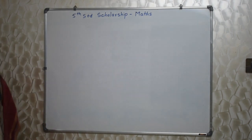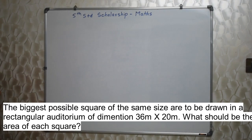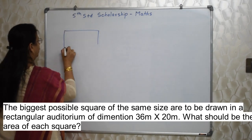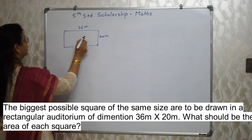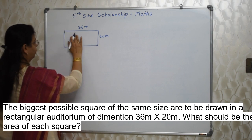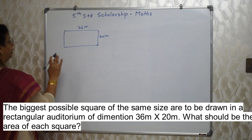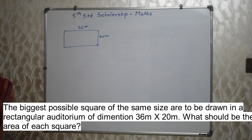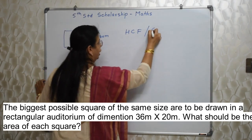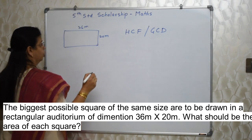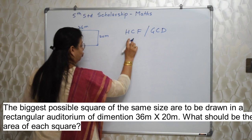The first sum: the biggest possible squares of the same size are to be drawn in a rectangular auditorium of dimension 36 meter by 20 meter. What should be the area of each square? There is a rectangular auditorium with length 36 meter and breadth 20 meter. We need to draw squares into this without any wastage of area. You have to take a hint from the word 'biggest' in the sum — biggest means highest, highest means HCF: highest common factor or greatest common divisor. So with that word 'biggest' we realize we have to find out HCF.